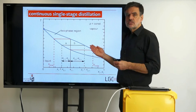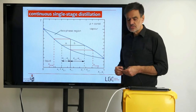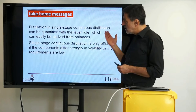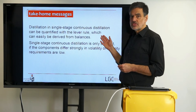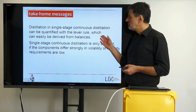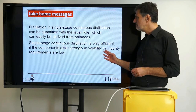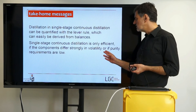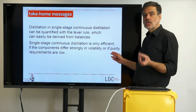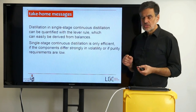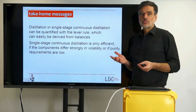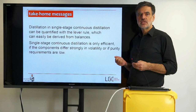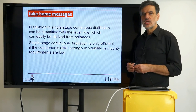This process is operated when the system allows it; otherwise, multi-stage processes are considered. To summarize: we have seen that single stage continuous distillation can be designed using the lever rule, which is easily derived from material balances. Efficient separation requires components that differ significantly in volatility, or purity requirements must not be too high. There is also a trade-off between flow rate and purity. In the next video, we will see how several theoretical stages can be combined to achieve higher purity. Thank you for today, and hope to see you again in the next video.